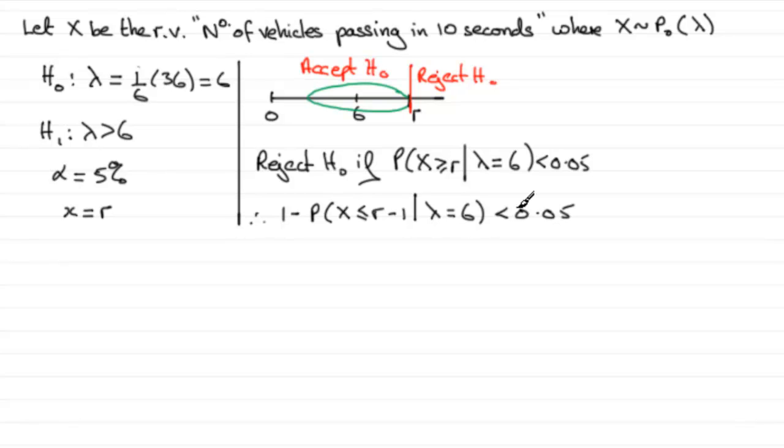Now we can rearrange this inequality. And if we add this probability to both sides and take 0.05 from both sides, we therefore have that the probability that X is less than or equal to R minus 1, given that lambda equals 6, has to be greater than 0.95. 1 minus 0.05.